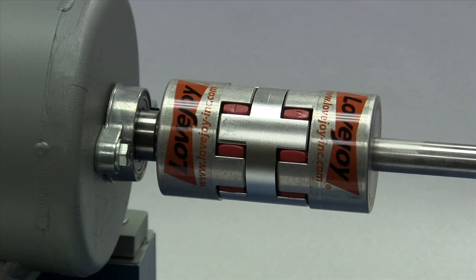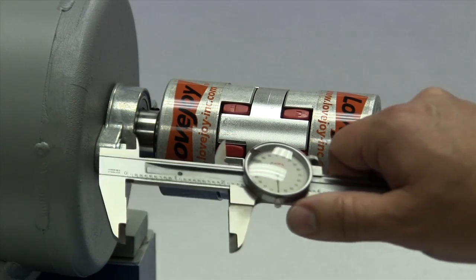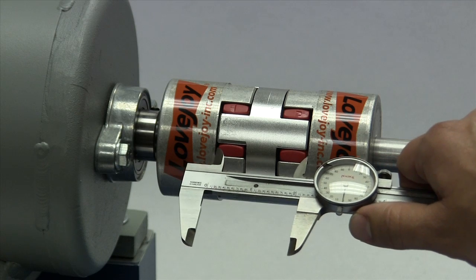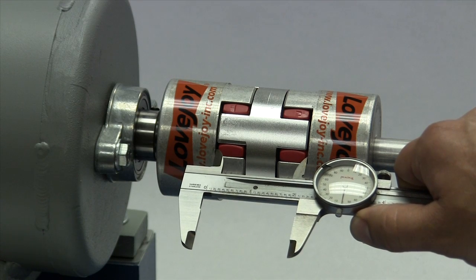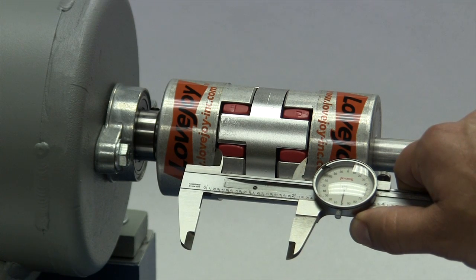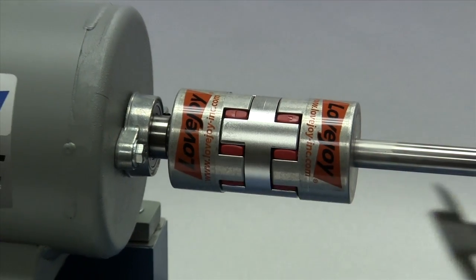At this time, check the shaft separation by measuring between the faces of the hubs. Compare this measurement with the BSE dimension in the installation guide for the particular size coupling you are installing.